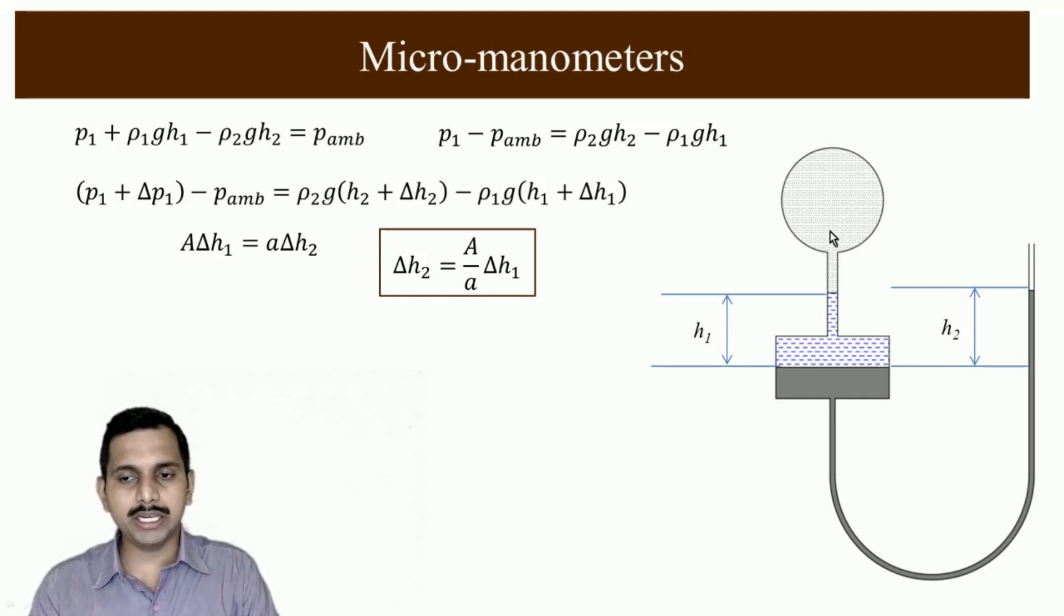You may ask sir why does this happen? Why does this happen? How it is useful if you have to see? What we have to do is, if we had used a similar diameter tube here, here to here it was a similar tube just like a U tube manometer. Then what would happen? A by A would be the same. So what happens, delta h2 would be delta h1. So the decrease in the level here would be equal to the increase in the level here.